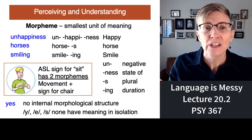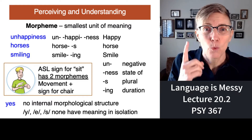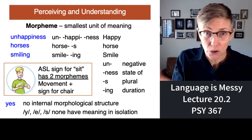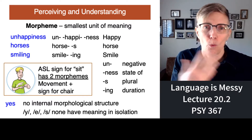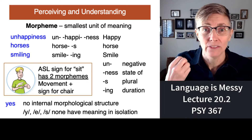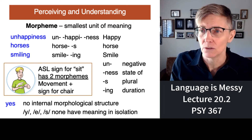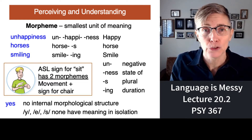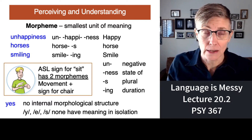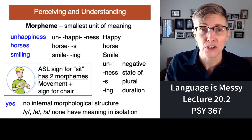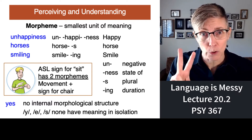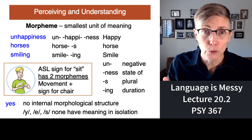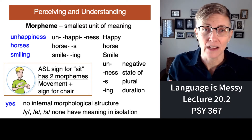The word 'yes' is just one morpheme — the Y or S by itself doesn't have any particular meaning. ASL has morphemes too. The American Sign Language sign for 'sit' has two morphemes: the sign for movement and the sign for chair.